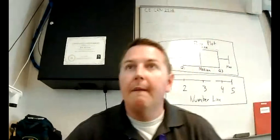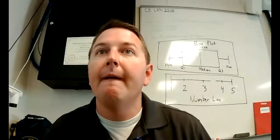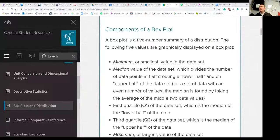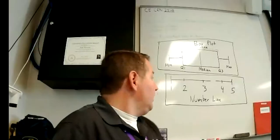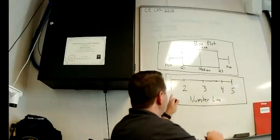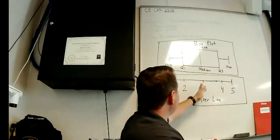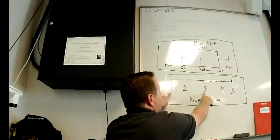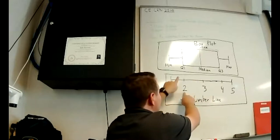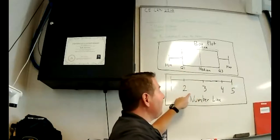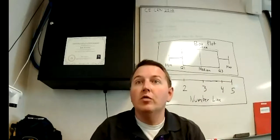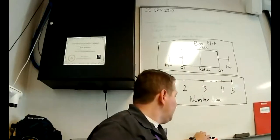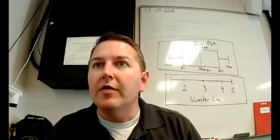The first quartile, Q1, is the median of the lower half of the data. On our number line going up to five, the first half of the data is from one to three, and the middle of that first half is number two — so that corresponds to Q1. For the upper half, which goes from three to five, the middle number between three and five is four, and that corresponds to Q3. Maximum is simply the largest value in the data set — the biggest number, which in our case is five.